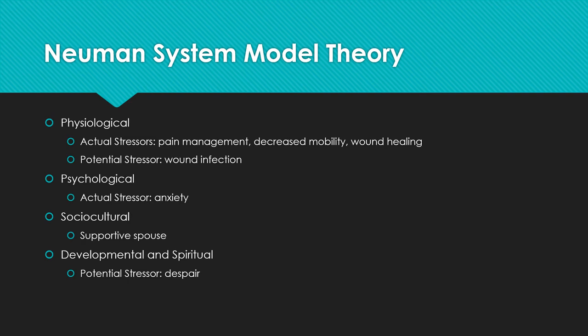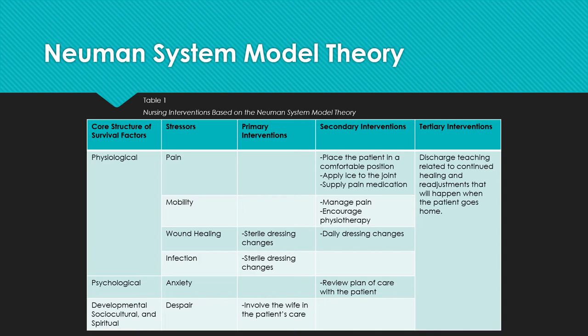According to Kane 2000, the patient is in Erickson's developmental stage of integrity versus despair, and from both the developmental and spiritual perspective, has the potential for feelings of despair. Based on the assessment, the nurse working through the Newman System Model Theory would then plan interventions to meet the patient's needs.